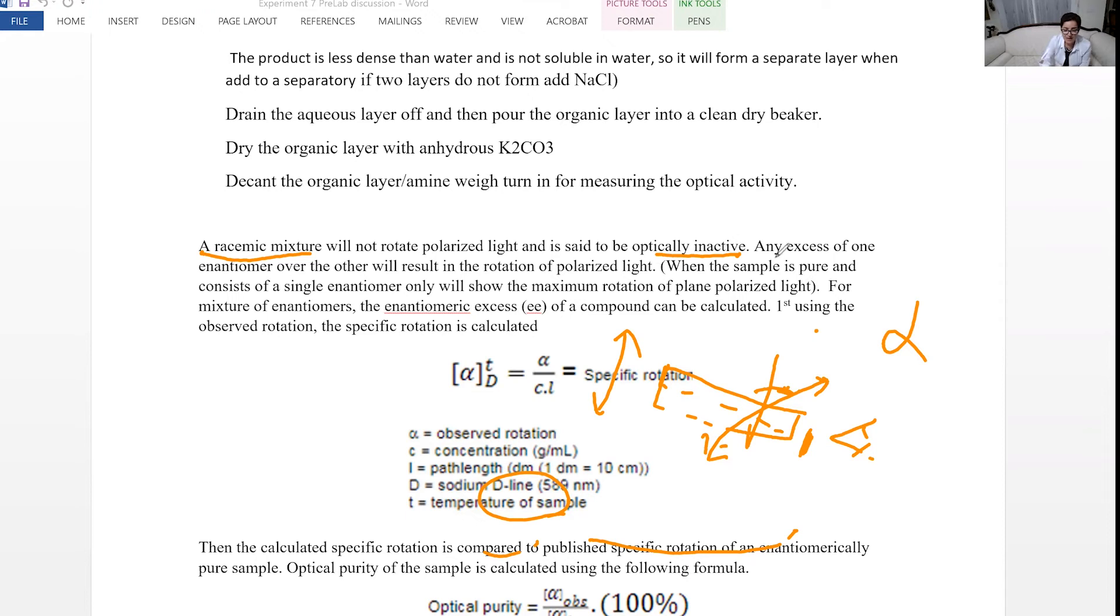But if you have excess of one of the enantiomers, then it would show rotation. The maximum rotation is going to be obtained if you have pure enantiomer. If you have 100% of one of the pure enantiomers, you would get the maximum rotation, which is equal to the literature value for that enantiomer.